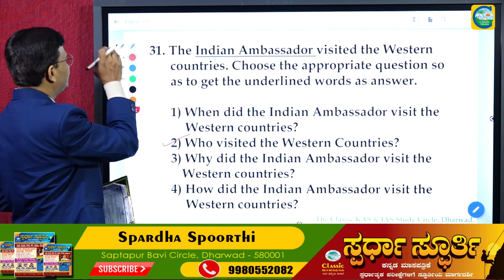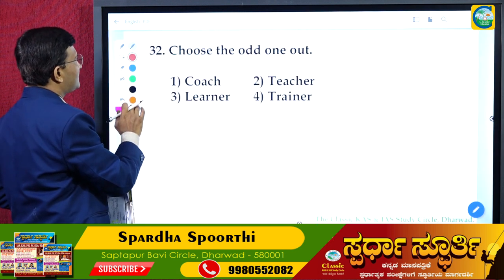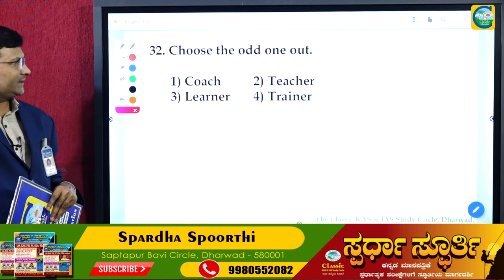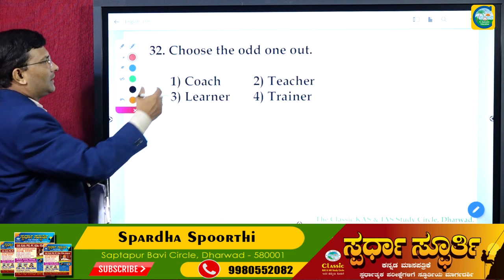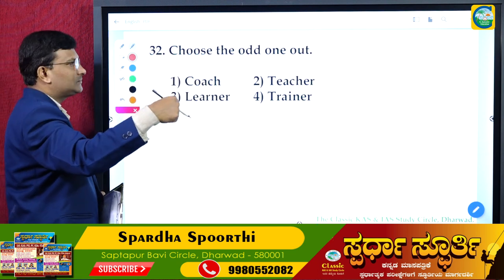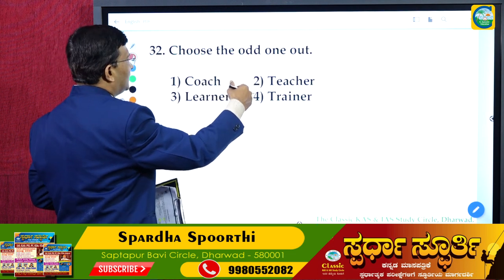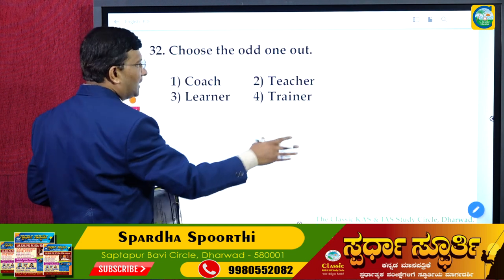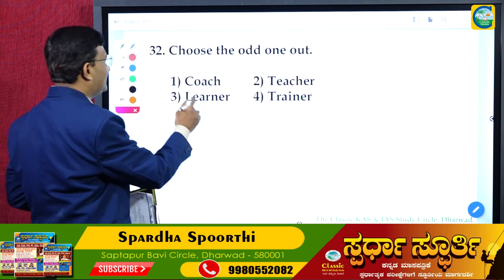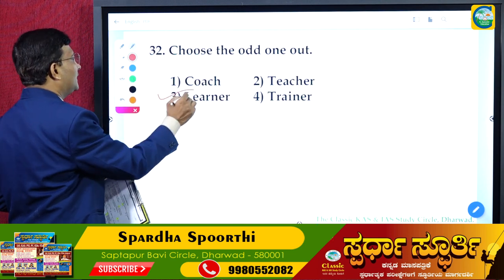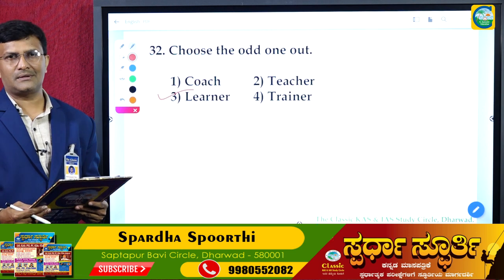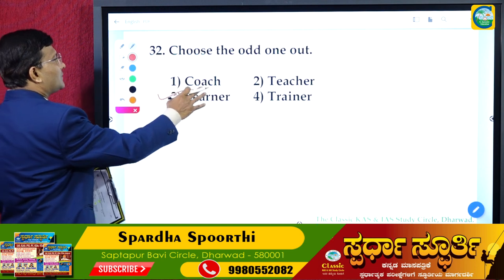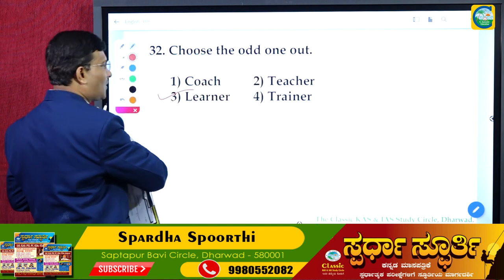Question 32: Choose the odd one out from — coach, teacher, trainer, learner. Coach gives training, teacher teaches, trainer also teaches. So these three are similar. Learner is the odd one out. The answer is 'learner.'